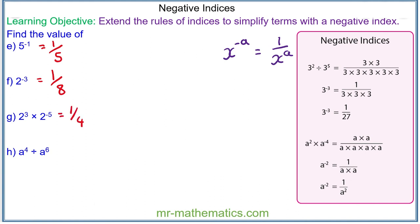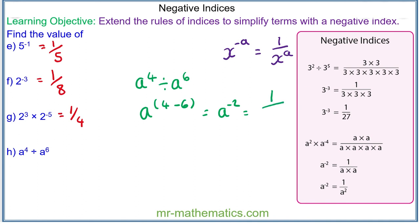And finally question h: we have a to the power of 4 divided by a to the power of 6. The division rule tells us we subtract the powers because the bases are the same. So we have a to the power of negative 2. The negative power tells us it is 1 over a squared. Thank you very much for watching, I hope you found that useful. Thanks again and take care.